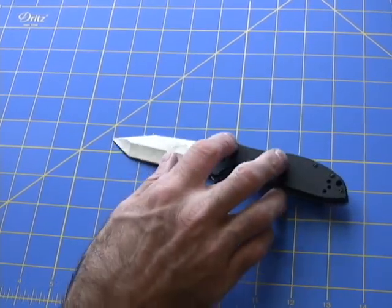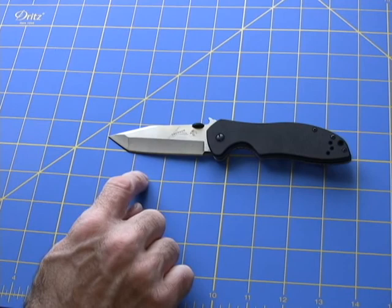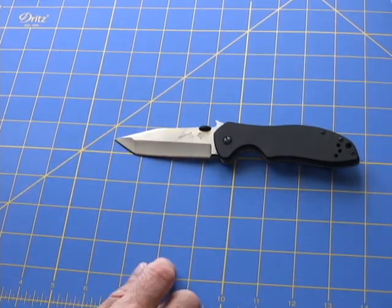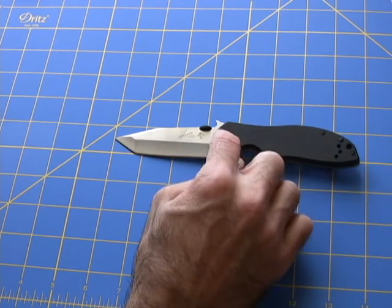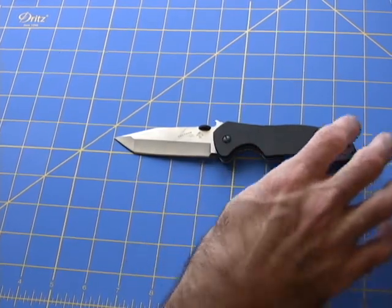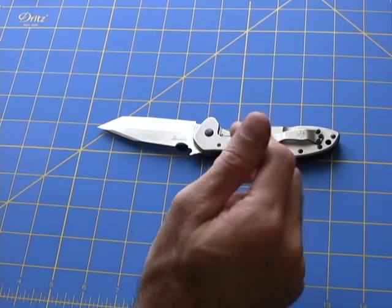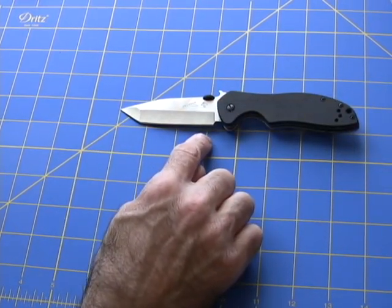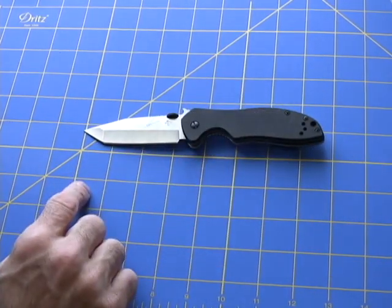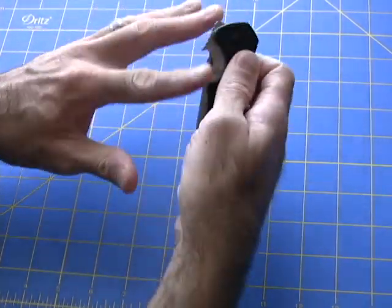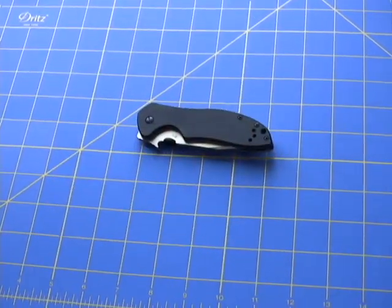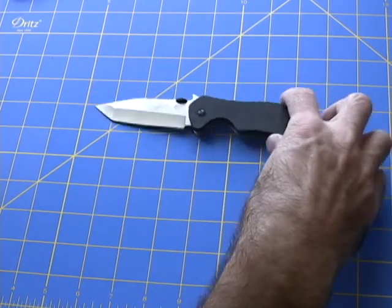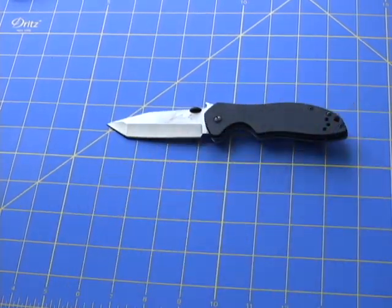The steel in the blade is 8CR14MOV, stonewash and satin finish. The handle is textured G10 and 410 bead blasted finish on the back of the handle. The blade length itself is 3.25 inches. Closed length is 4.5 inches. Together, open and closed, we're looking at 7.75 inches.